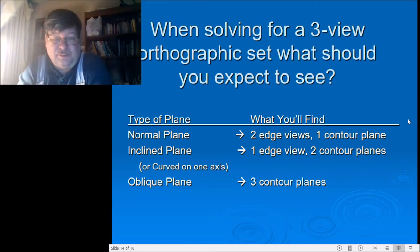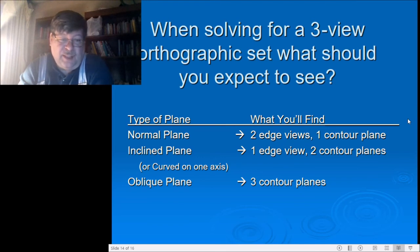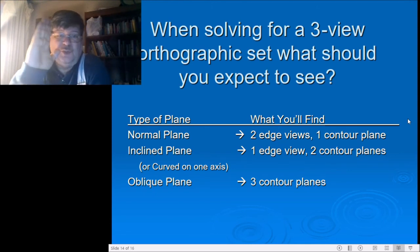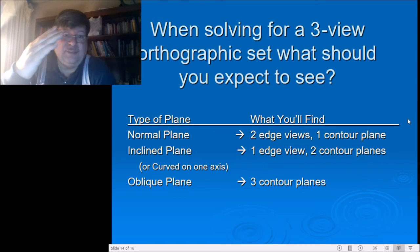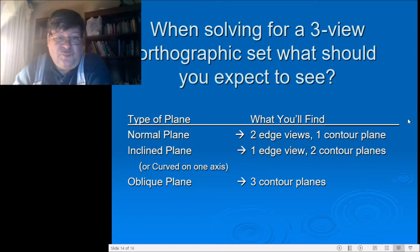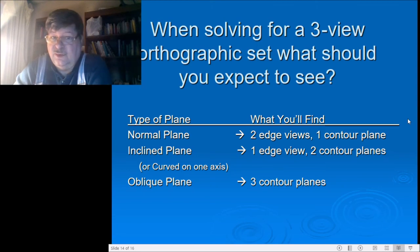An oblique plane — which the book also calls a compound plane — is a plane rotated on two or more axes. In all three views, that oblique plane will look like a contour; you will see the shape of the plane, although foreshortened, in all three views. It's nice to know what you're looking for when solving problems. Remember this slide and write it down, because when you're solving missing-view problems you'll come back to it for clues.